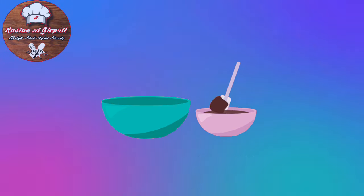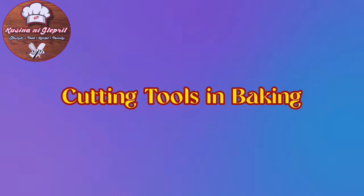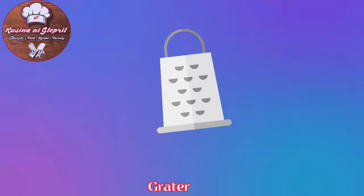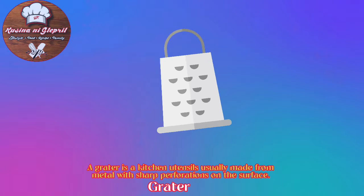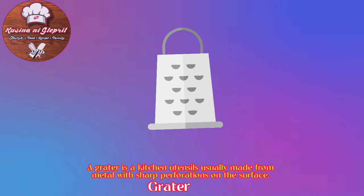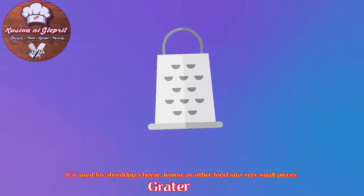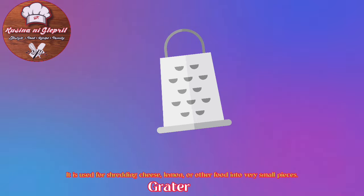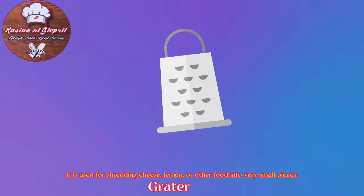Cutting Tools in Baking. Grater: A grater is a kitchen utensil usually made from metal with sharp perforations on the surface. It is used for shredding cheese, lemon, or other food into very small pieces.